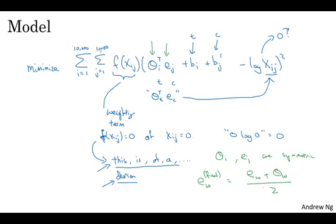That's it for the GloVe algorithm. I think one confusing part of this algorithm is if you look at this equation, it seems almost too simple. How could it be that just minimizing a square cost function like this allows you to learn meaningful word embeddings? But it turns out that this works. The way the inventors ended up at this algorithm was they were building on the history of much more complicated algorithms like the neural language model and later the word2vec skip-gram model. Then this came later and really helped to simplify all of the earlier algorithms.